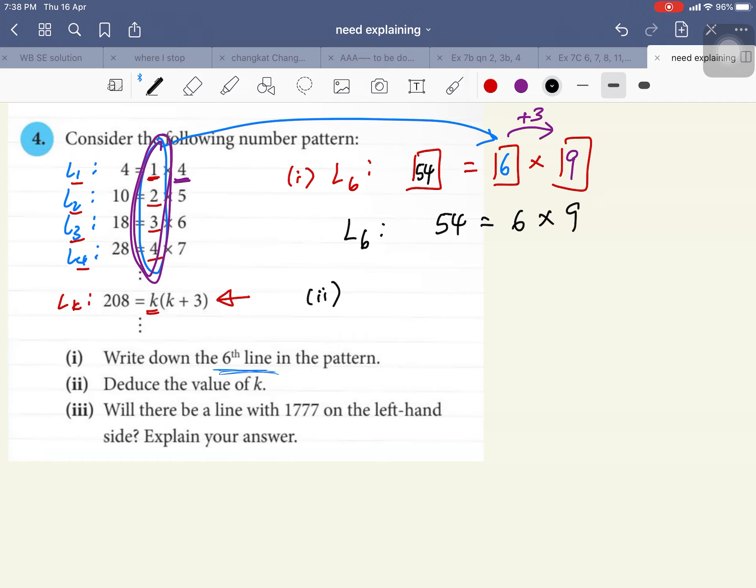Now, part 2. You're supposed to deduce the value of K such that 208 is equal to K times K plus 3. Okay, so for this question, you have to do try and error, or guess and check. Okay, so you can guess that K is 13 because 13 times 16 will give you 208. So it's by guess and check.